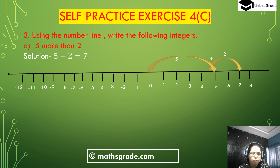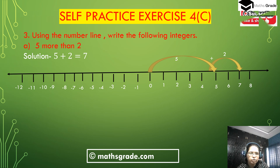Now we solve question number 3. Question number 3 is: using the number line, write the following integers. First bit (a) is 5 more than 2. 5 is a positive integer, so starting from 0 the number goes to the right hand side to 5. 'More than' means plus, so starting from 5 the number goes 2 more places to 7. Then 5 more than 2 will be 5 plus 2 equals 7.